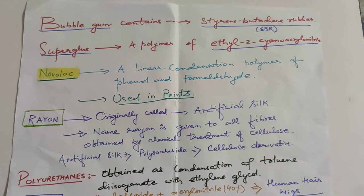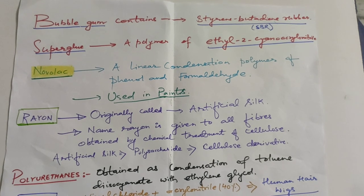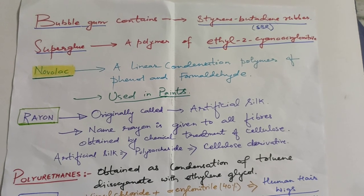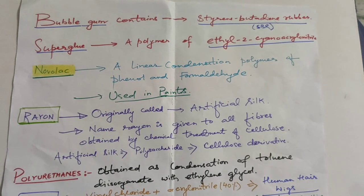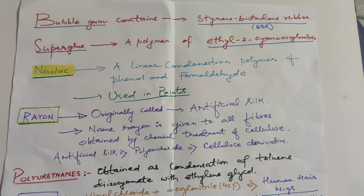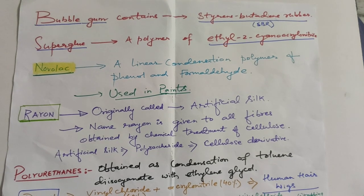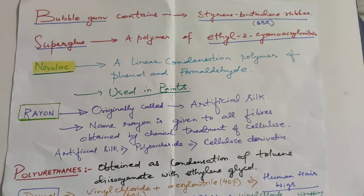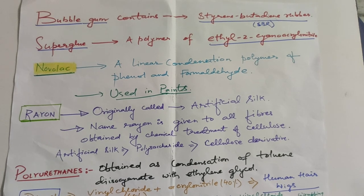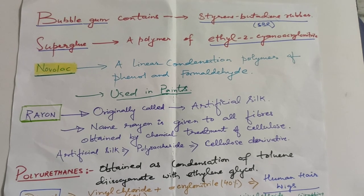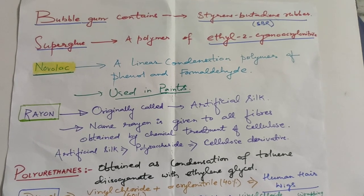Bubble gum contains styrene-butadiene rubber (SBR). Super glue is a polymer of ethyl-2-cyanoacrylate. Novolac is a linear condensation polymer of phenol and formaldehyde, and it is used in paints.